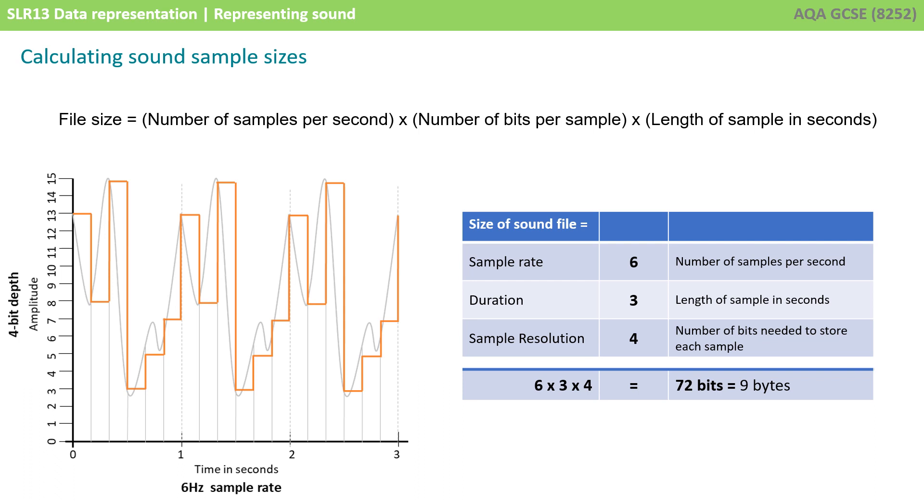The sound file is 3 seconds long, and we have a sample resolution of 4 bits. In other words, every time we're sampling the sound, it's storing 4 bits of information. 6 times 3 times 4 is 72 bits. If we divide that by 8, we have 9 bytes.